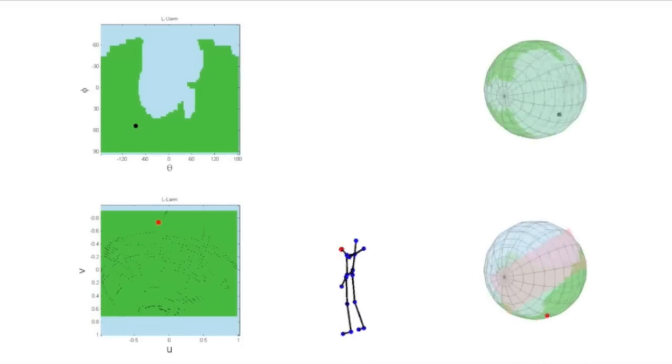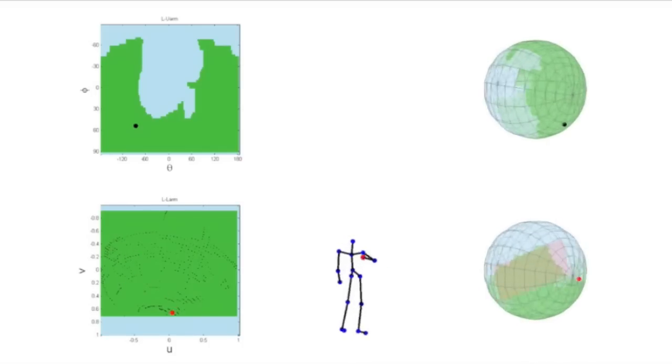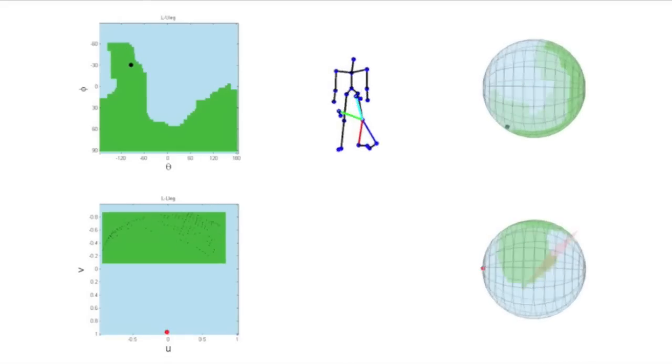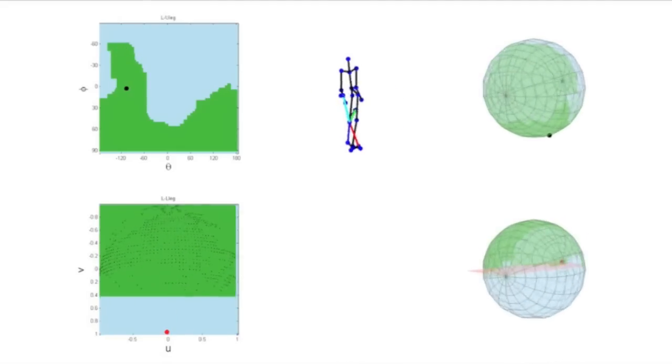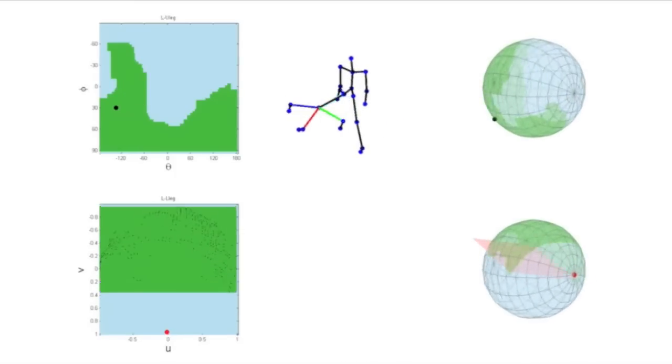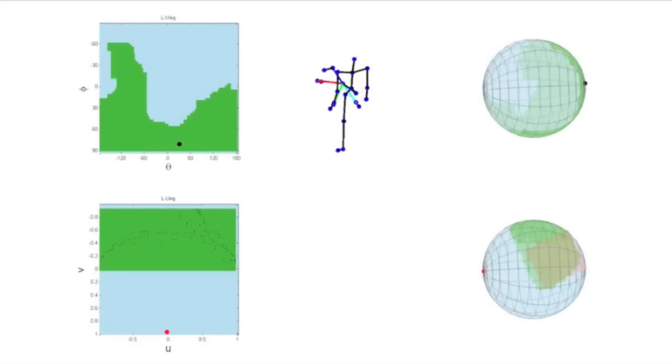For different positions of the elbow, the joint angle limit changes for the wrist. Here you can see the joint angle limits for the right ankle, conditioned on the position of the right knee. Again, you can see that the joint angle limits are different for different positions of the knee. In the top middle, you can see the poses corresponding to the four corners of the planar patch.